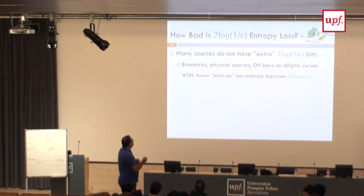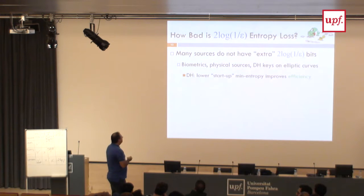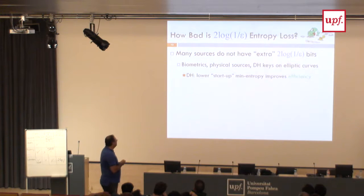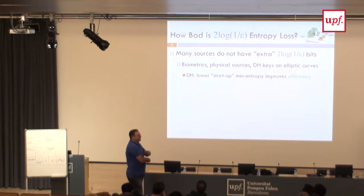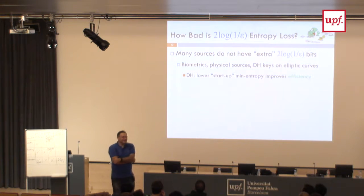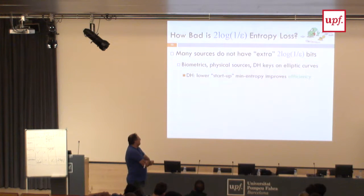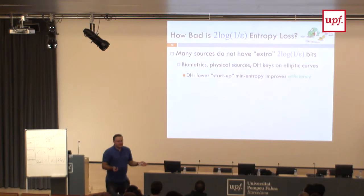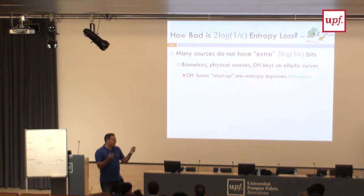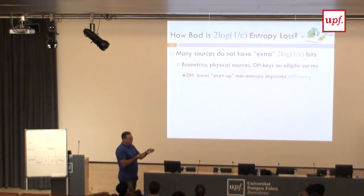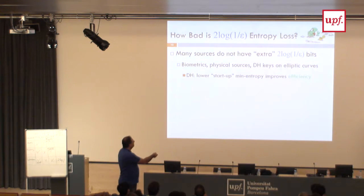How bad is this entropy loss? For many sources — biometrics, physical sources — they don't have this extra 2 log(1/epsilon) bits. For biometrics or traditional sources in operating systems that look at timing between interrupts, there's a lot of partial information known to a potential attacker. For Diffie-Hellman key exchange, the entropy corresponds to the group size. If you want really fast elliptic curves, you use a small group — less entropy, but much faster efficiency. Low entropy corresponds to much faster efficiency.